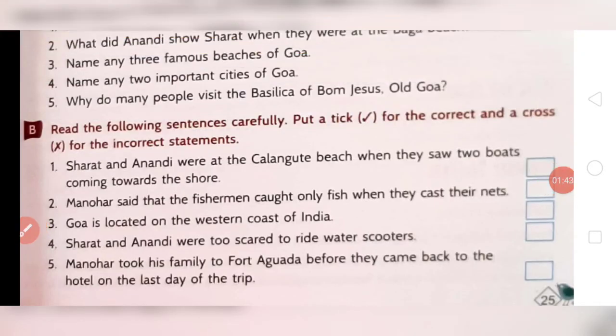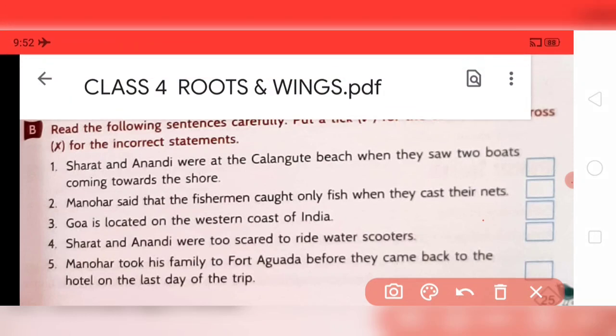Now move to question number B. Read the following sentences carefully — put a tick for correct and a cross for incorrect statements. There are five statements given and you have to identify which are correct. Statement one: Sharath and Anandi were at the Calangute beach when they saw two boats coming towards the shore. That is not correct, so you will cross it.